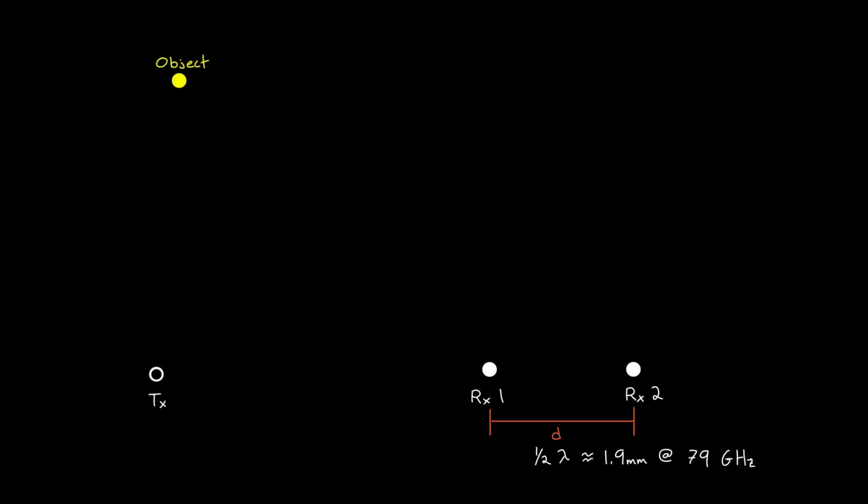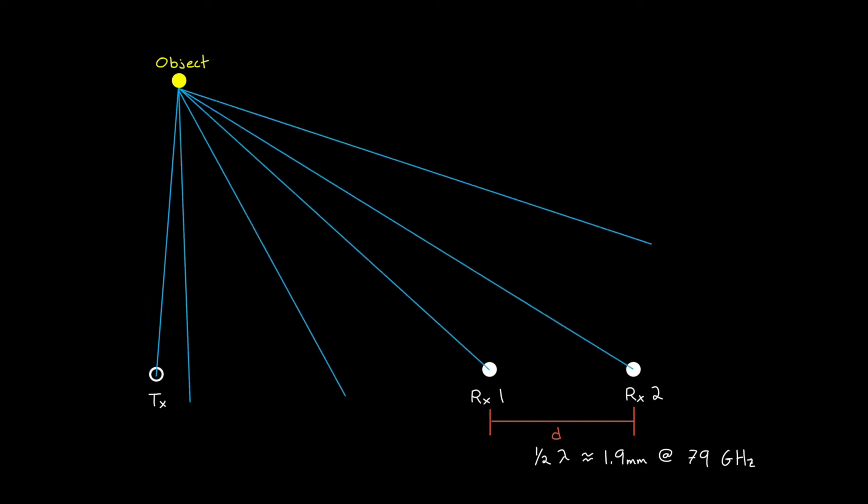Alright, so the transmit antenna sends out a frequency modulated signal, mostly in the direction of the beam. Some rays intercept the object and bounce off, and then some of those rays are reflected back towards the receive antennas.